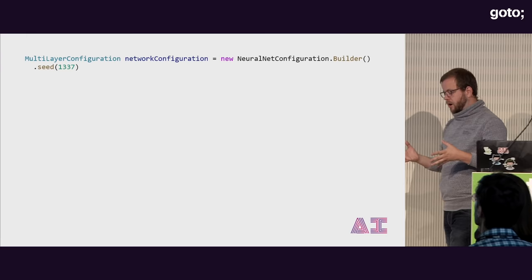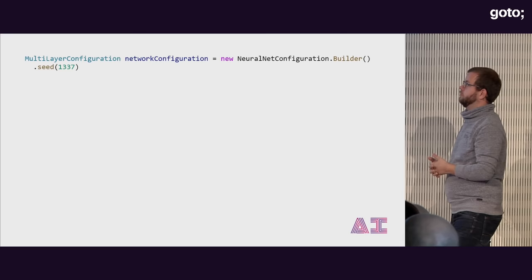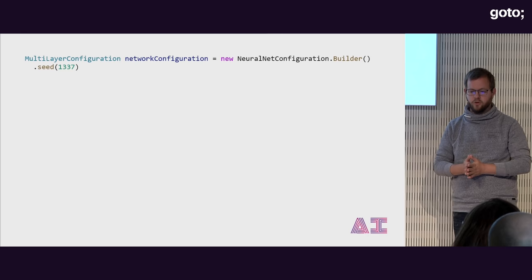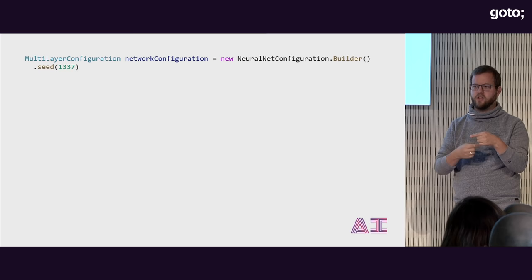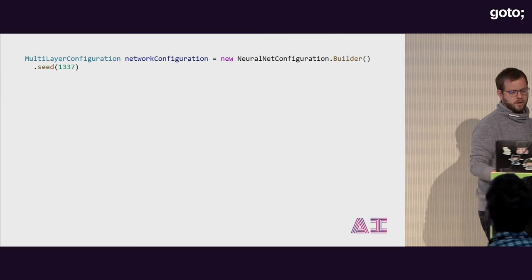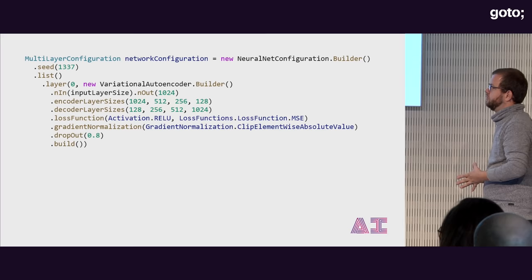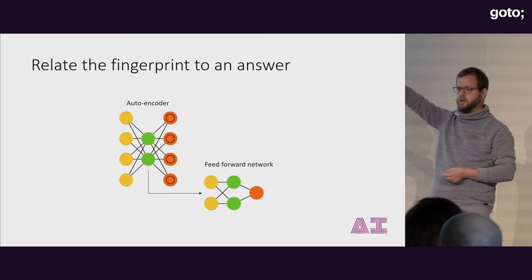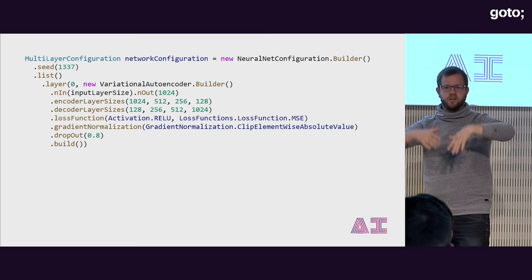So how does this work in Deep Learning 4J? It starts with a neural network configuration. What we do is build a multi-layer configuration for a neural network using a builder — classic Java development. I set a random seed to fix the random number generator so it generates the same random numbers every time I'm training. Then in this configuration I will say: at index 0, I want a variational autoencoder — that's the left part of the architecture I showed before.